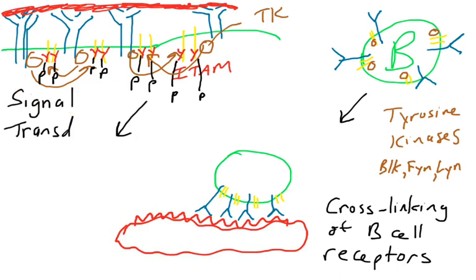If ITAMs become phosphorylated, that triggers signal transduction through the cytoplasm into the nucleus, which will tell the cell, hey, we've been activated. We've been called to duty. Let's activate. Let's undergo mitosis and form an army of clones. So I'm not going to cover signal transduction in this video or in this class, but there are proteins that will send the signal from the plasma membrane all the way into the nucleus. And that's the first signal that is required for B cell activation. So it involves B cell receptor cross-linking, activation of tyrosine kinases, phosphorylation of ITAMs.